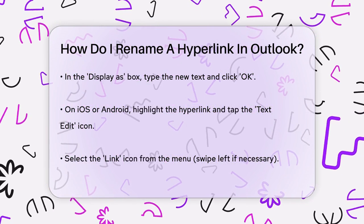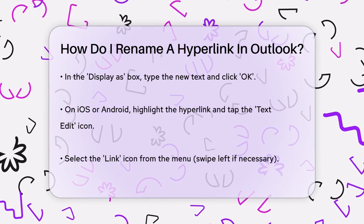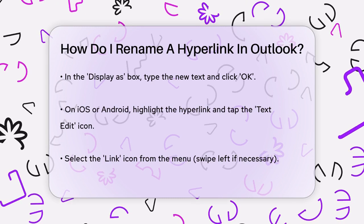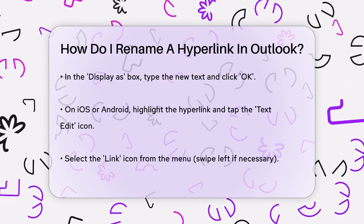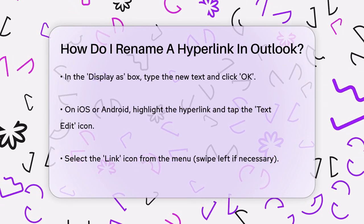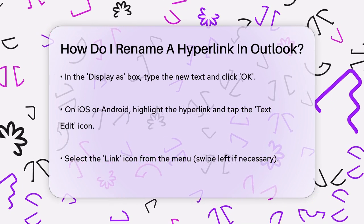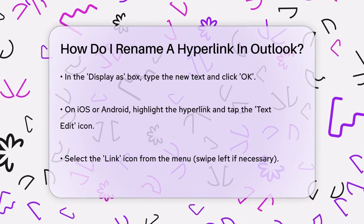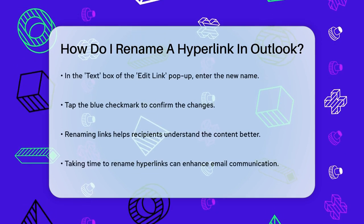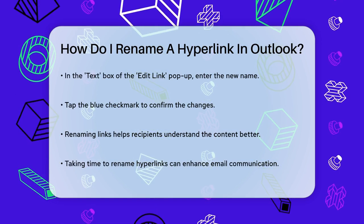For those using Outlook on iOS or Android devices, start by highlighting the hyperlink you want to change. Tap the Text Edit icon, which looks like an A with a small pencil. In the new menu, select the Link icon — you might need to swipe left to find it. In the text box of the Edit Link pop-up, enter your preferred name for the hyperlink and tap the blue checkmark to confirm.